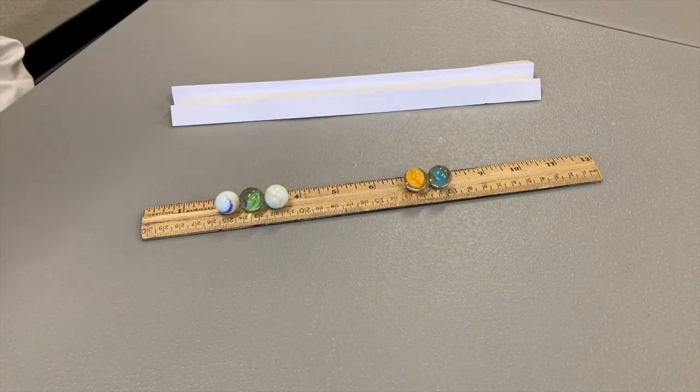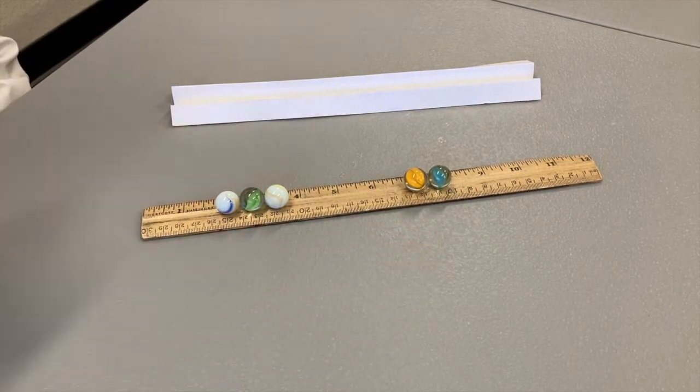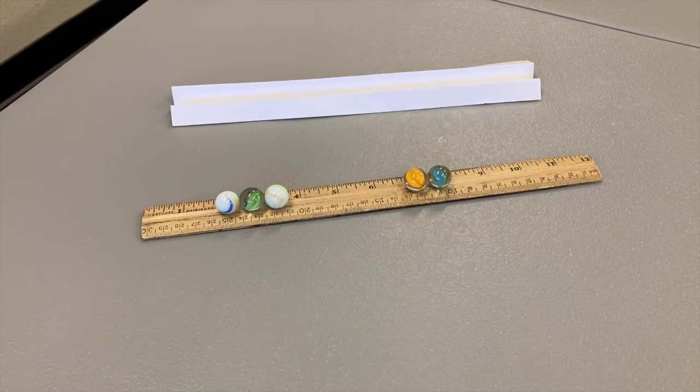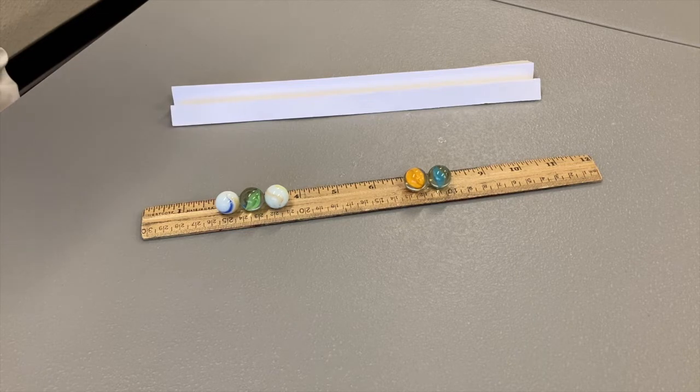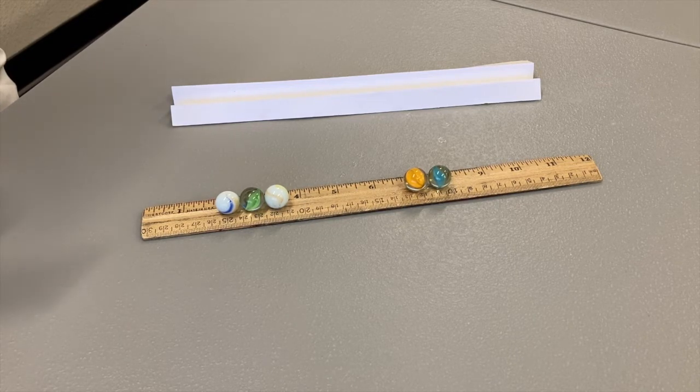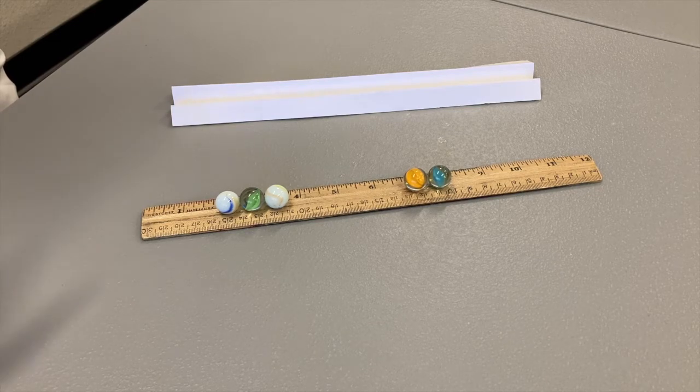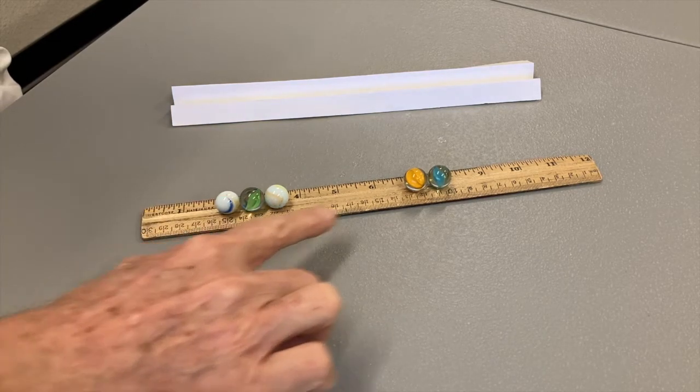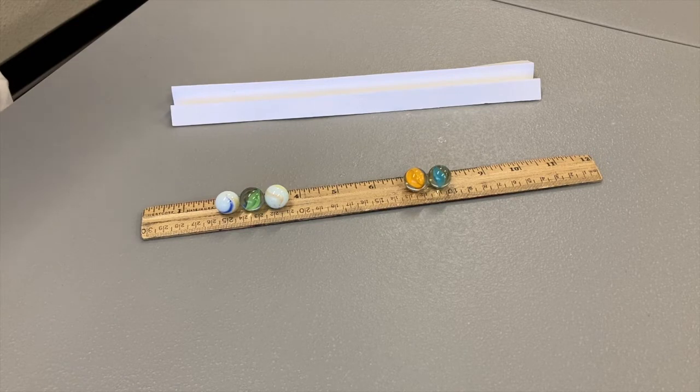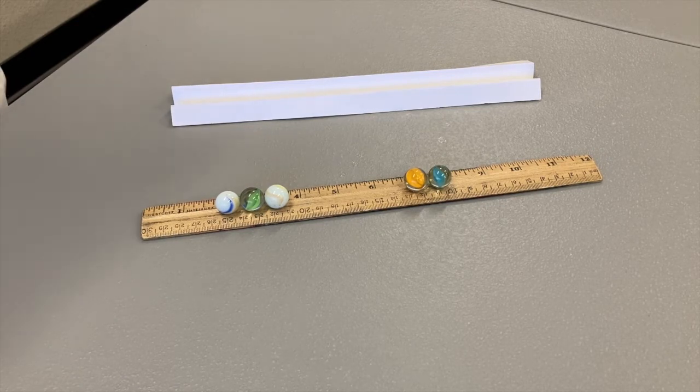For question three, it says to set up two near the center and roll in three. According to what we've learned, how will this even work? When I roll in one, one rolls out. When I roll in two, two roll out. But if I roll in three, how can three possibly roll out? Have students write their hypothesis.